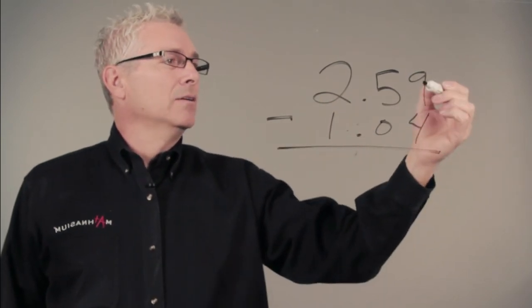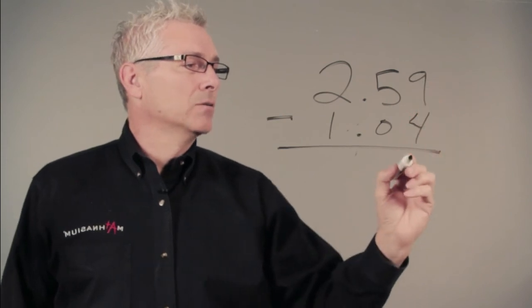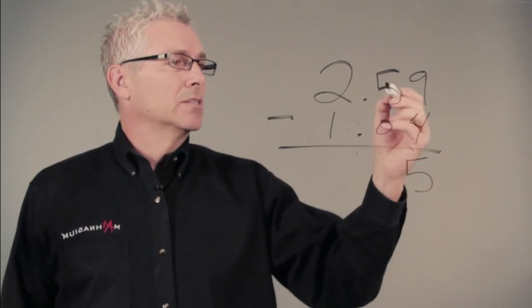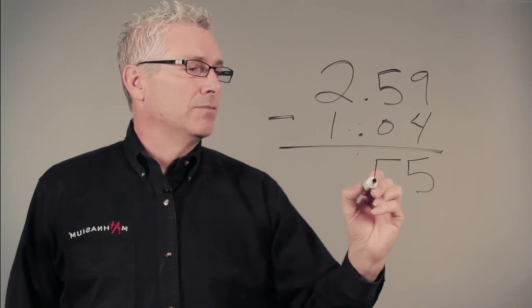We subtract 4 from 9, which is 5. We subtract 0 from 5, which is 5 again.